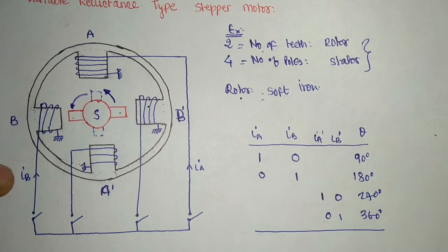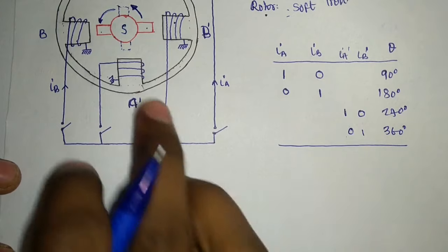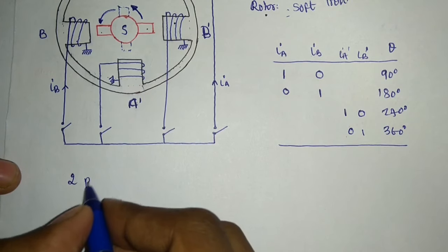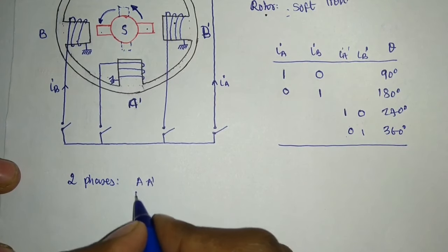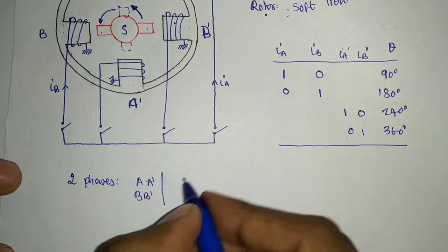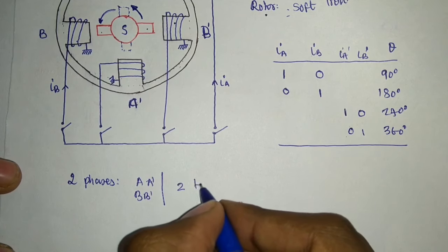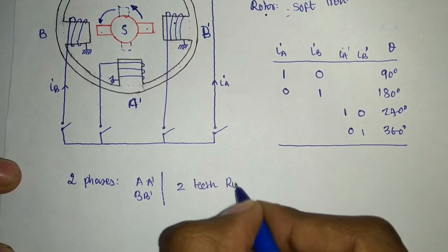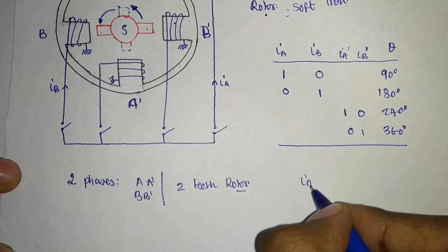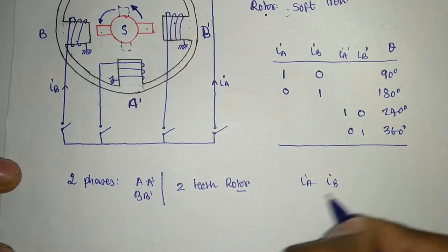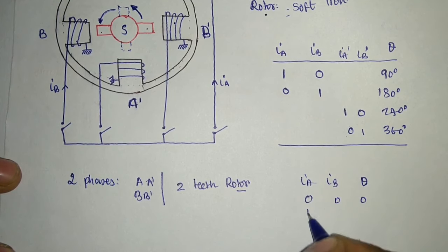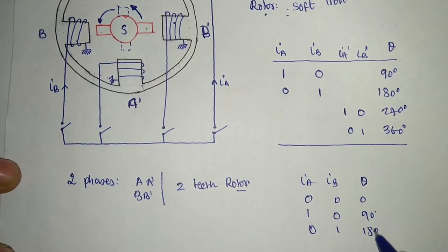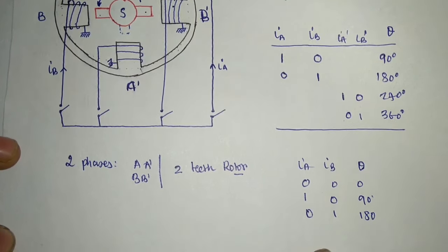Drawing the logic table for two phases — A A-dash and B B-dash — and two teeth on the rotor: when A=0, B=0 → theta=0; when A=1, B=0 → theta=90°; when A=0, B=1 → theta=180°; and so on. This is a two-phase system with two teeth on the rotor.